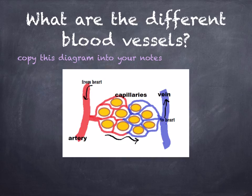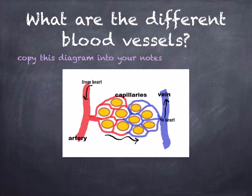Blood flows around the body in a system of tube-like vessels which we call blood vessels. These are arranged in such a way that they'll eventually lead back to the heart. There are three main types of blood vessels you need to know at IGCSE: arteries, capillaries and veins.